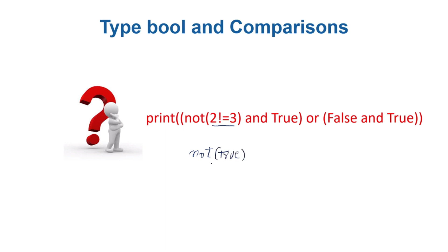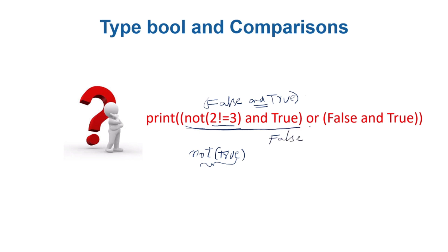not(true) is false. So this whole first part is false. Now false and true — that is false, so everything up to here is false. Then we have 'or', and then false and true, which is also false. So it's false or false, which is false.